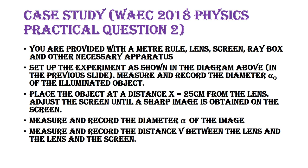The instructions say: set up the experiment as shown in the diagram. Measure and record the diameter alpha-naught of the illuminated object. This diameter acts as the size or height of the object — it is your object height OH in physics. So alpha-naught equals OH. You can use any symbol they give you, but identify what represents object height, image height, object distance, and image distance.